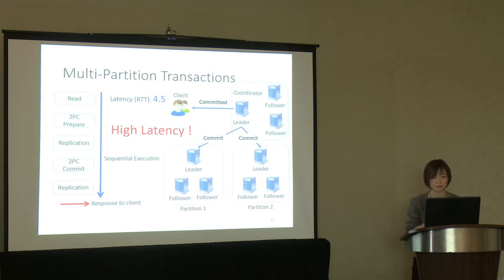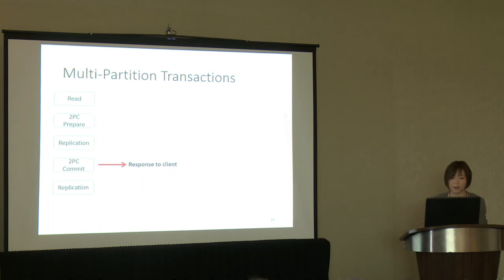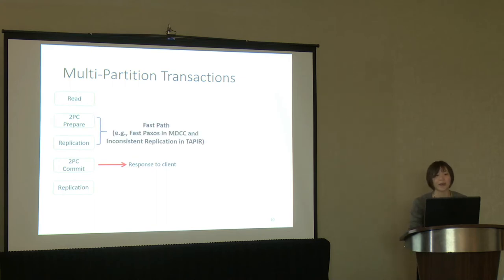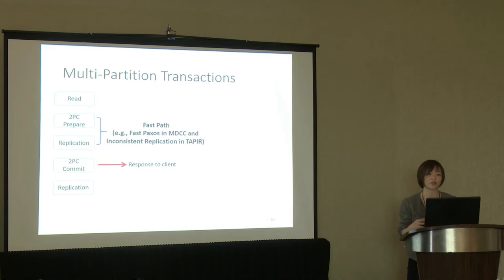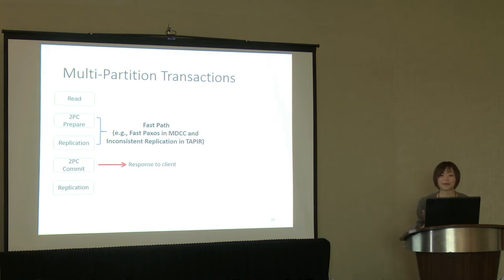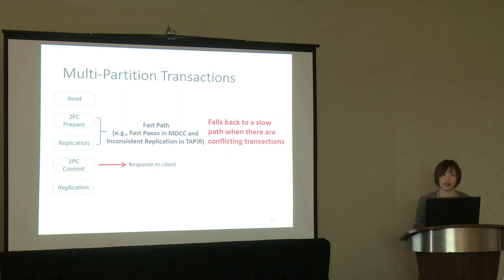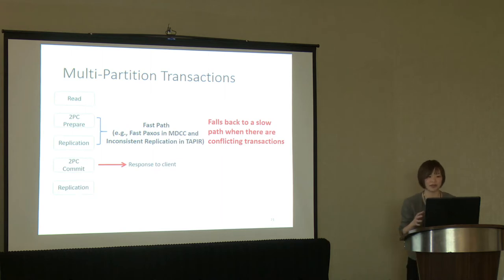Following the 2PC protocol, the coordinator determines whether to commit or abort the transaction. Once it has a decision, it does the replication first before sending the result to the client and the leaders. All these steps are executed sequentially, which incurs very high latency — this protocol requires 4.5 roundtrips to complete. There are many ways to reduce this latency. One easy way is to respond to the client before making the commit decision reliable, which is possible because the commit decision is deterministic. Another approach used by systems such as MDCC and Taper is to create faster paths where 2PC prepare and replication steps run in parallel, completing in just one wide area network roundtrip. However, the faster path can fail if there are conflicting transactions running concurrently, causing the system to rerun the entire transaction on the slow path, resulting in very high worst-case latency.